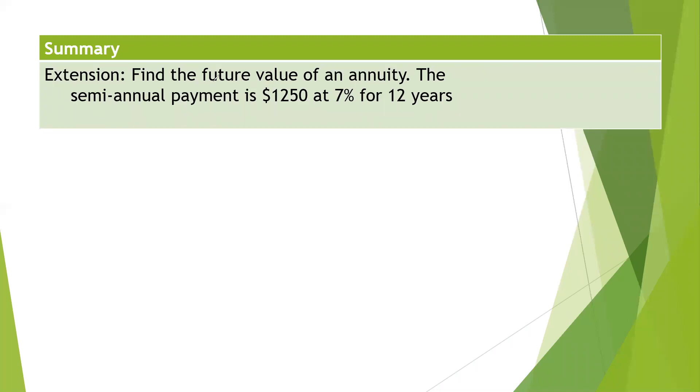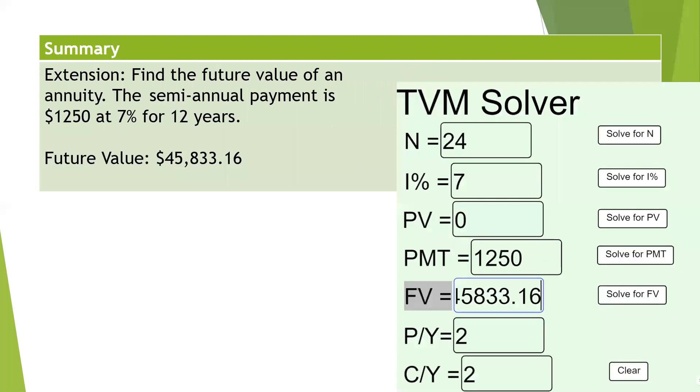Thanks for coming back. We want to find the future value. Semi-annually means two times a year. Let's look at what we're going to put in the solver. Because semi-annually means twice a year, we're going to have 2 times 12. You'll fill in twos here for semi-annual, zero for the present value, and the payment is what they gave us. When we click on the future value, that's $45,833.16.